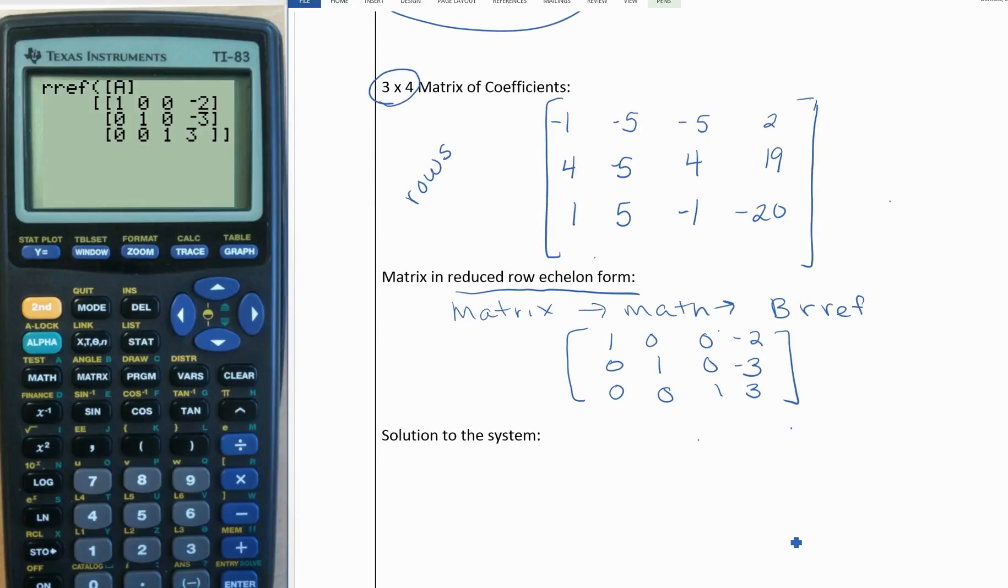What this tells us is that x equals negative 2. This is saying 1x equals negative 2, 1y equals negative 3, and z equals 3.